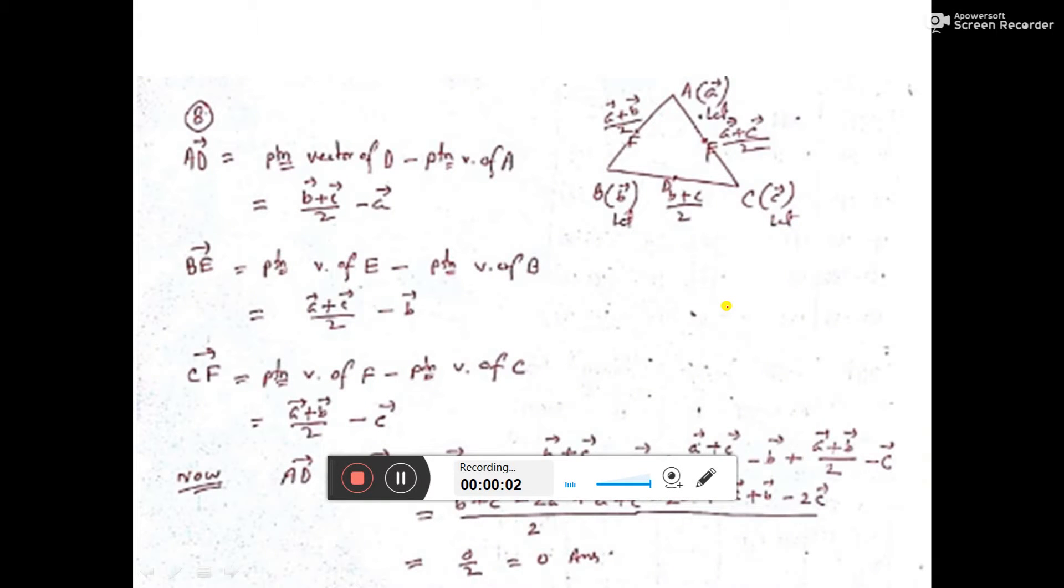The question asks to show that the sum of the three vectors determined by the medians of a triangle directed from the vertices is 0.